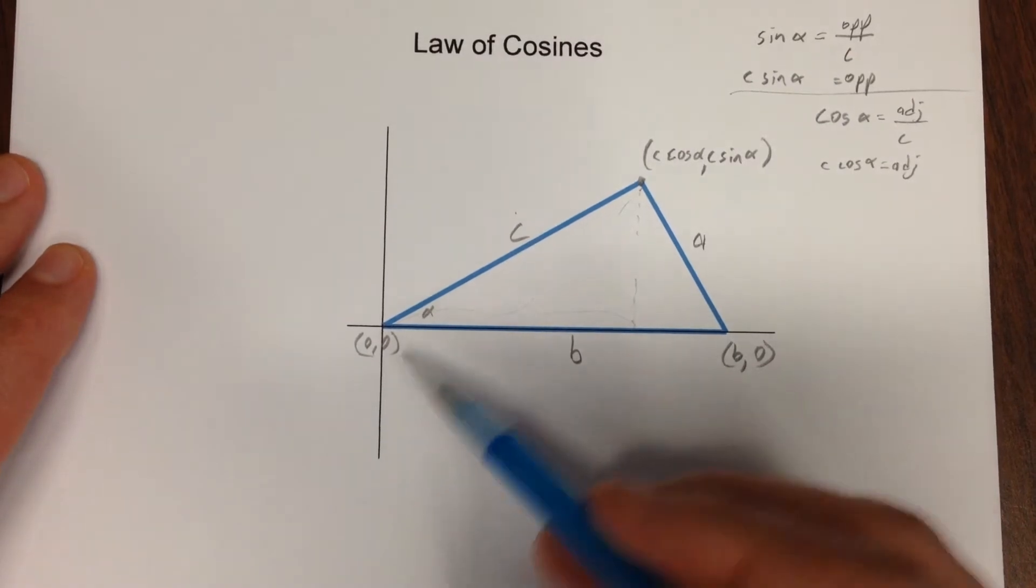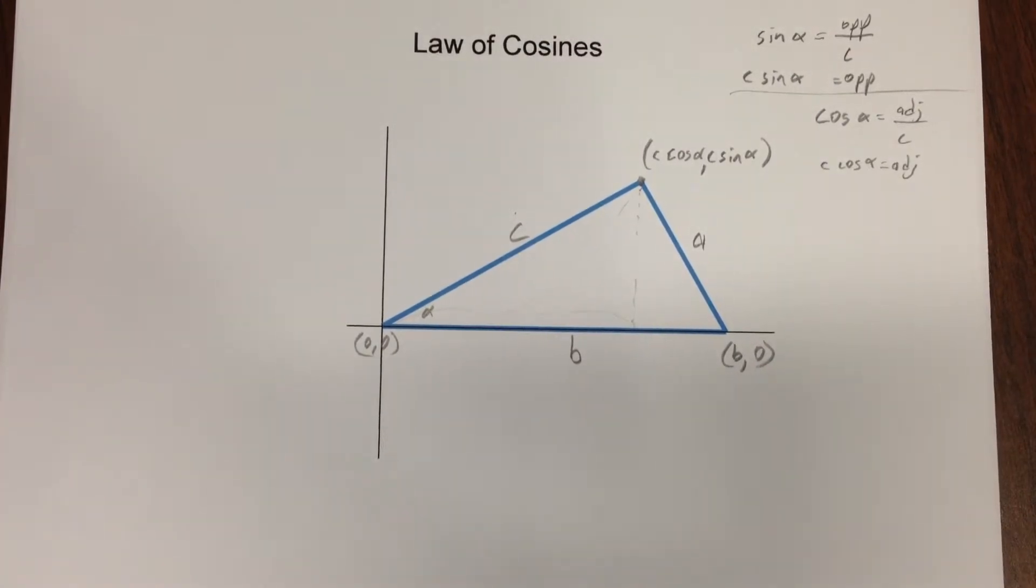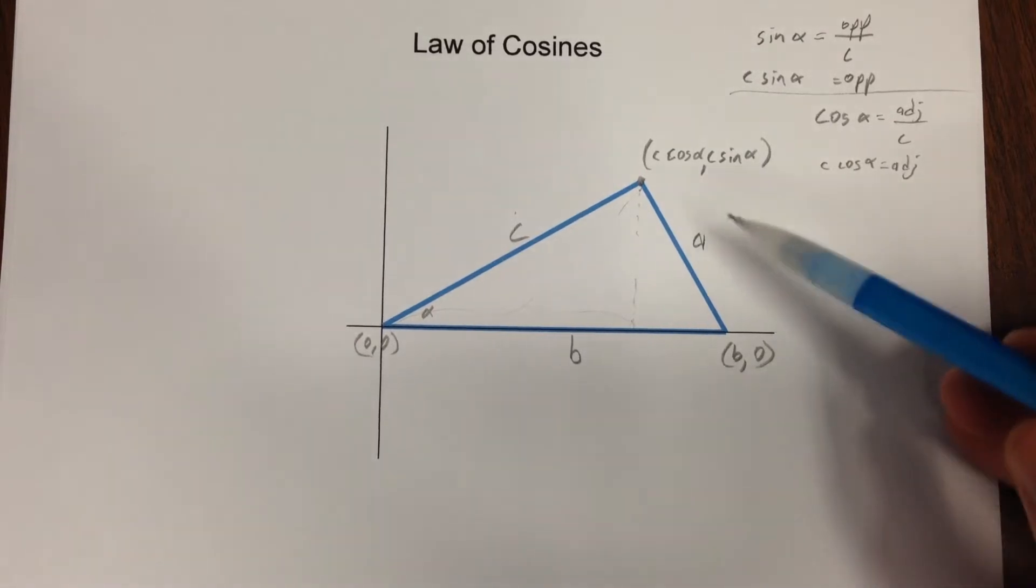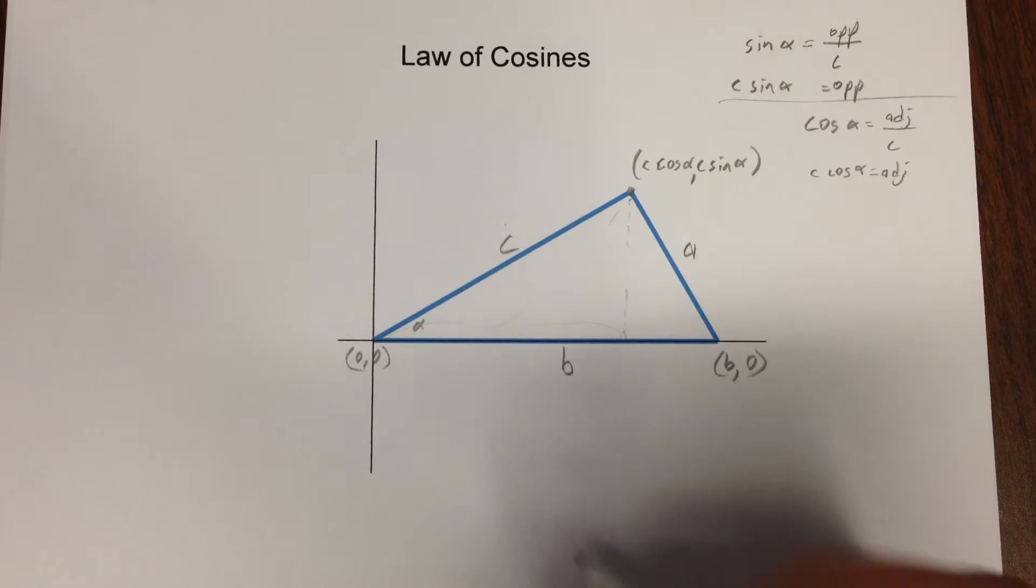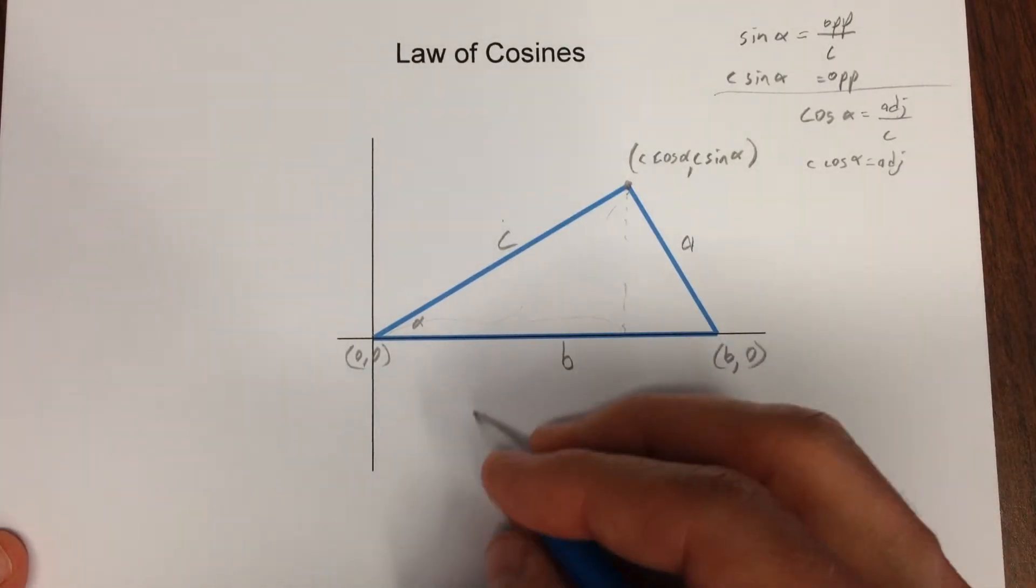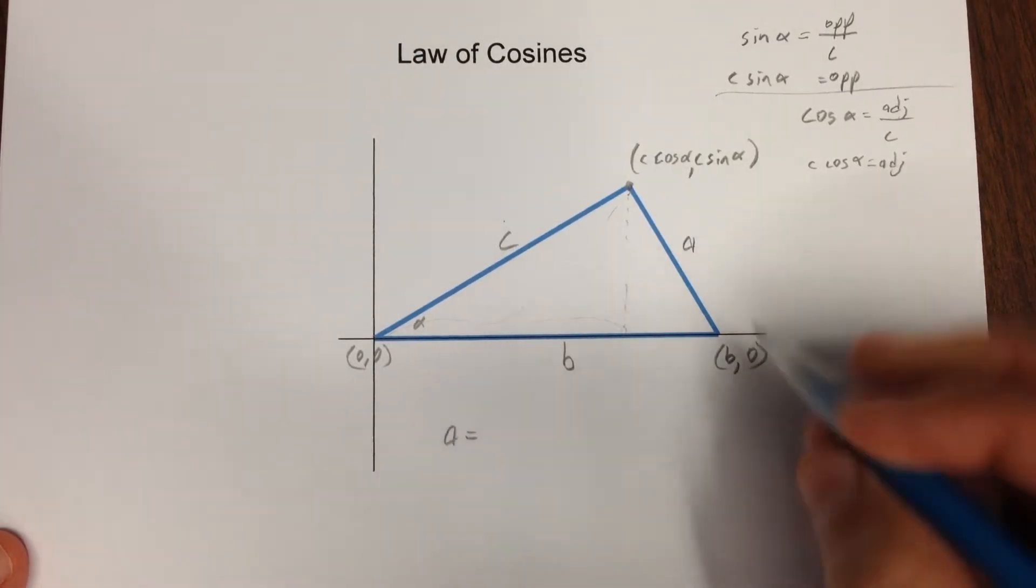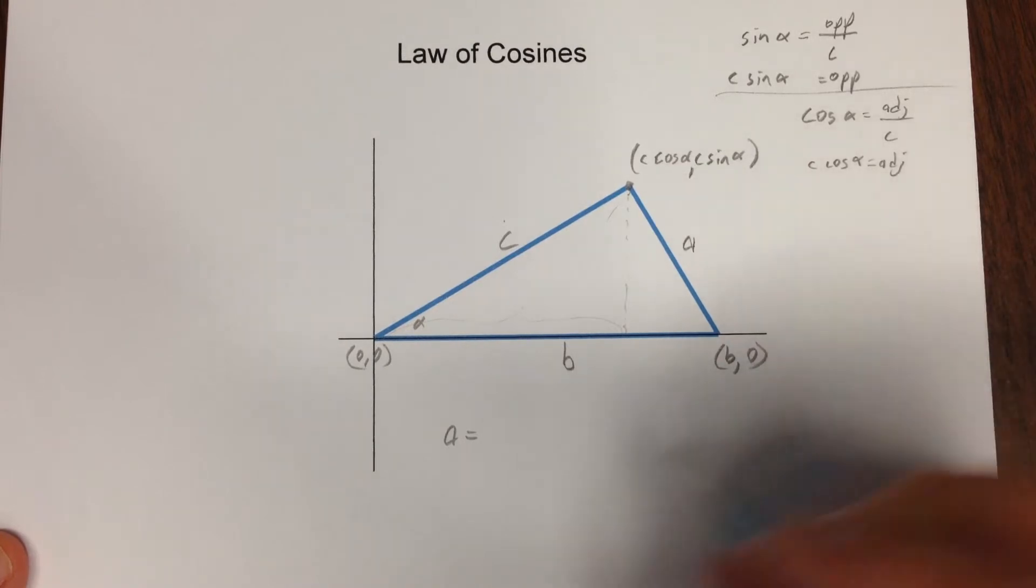Now what I'm going to be trying to do for the law of cosines is say there are actually two different ways to describe the length of this side. One is just to say it's the side length A. The other is to take these coordinates and use the distance formula.